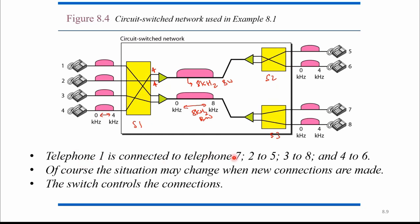So telephone one is connected with telephone seven. Similarly, two is connected with five, and three is connected with eight. This is how connections are made in a circuit switched network.